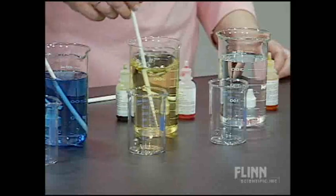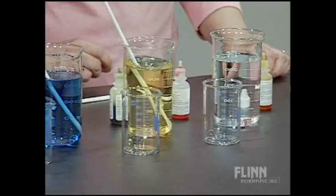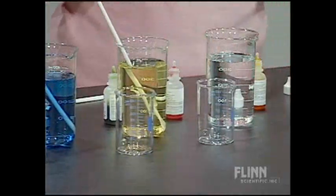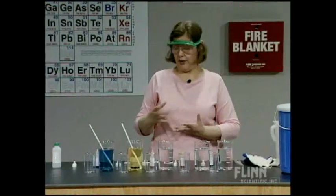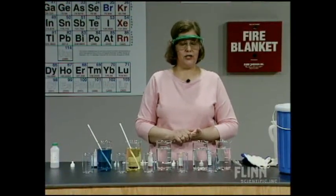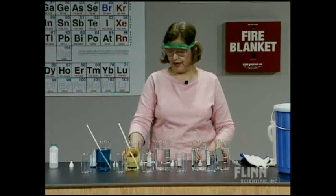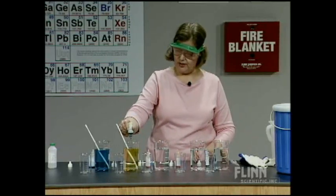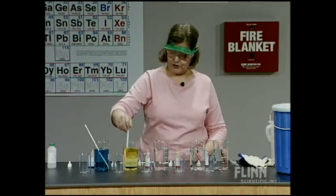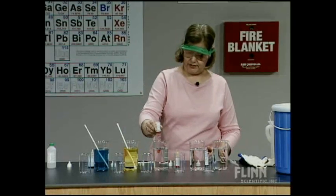I have a yellow solution there, which is universal indicator. Universal indicator is a different color at each pH value. At yellow, that corresponds to a pH of about 6. I'm going to add a little bit more there just so that we have some nice, deep, rich red colors.